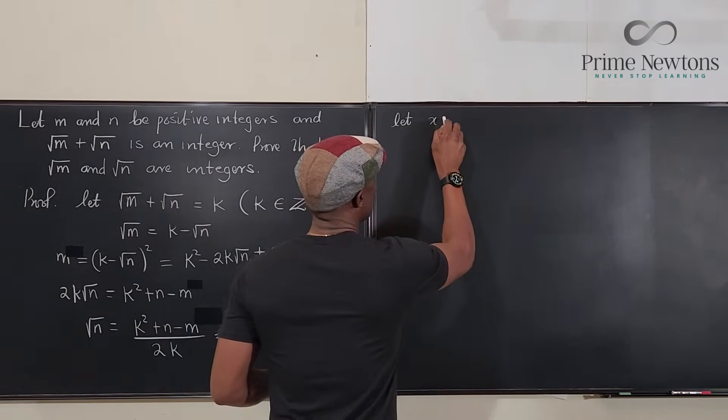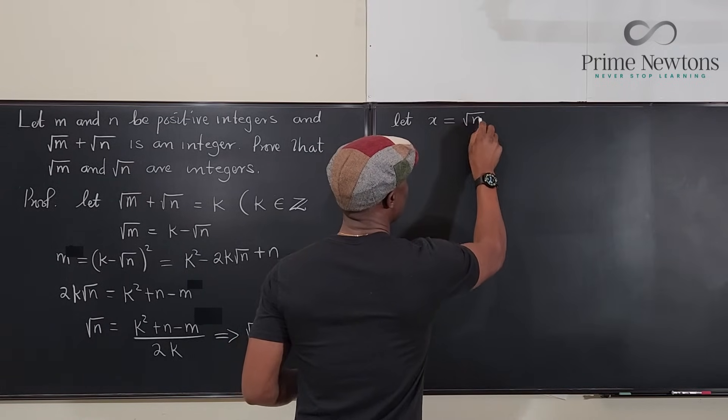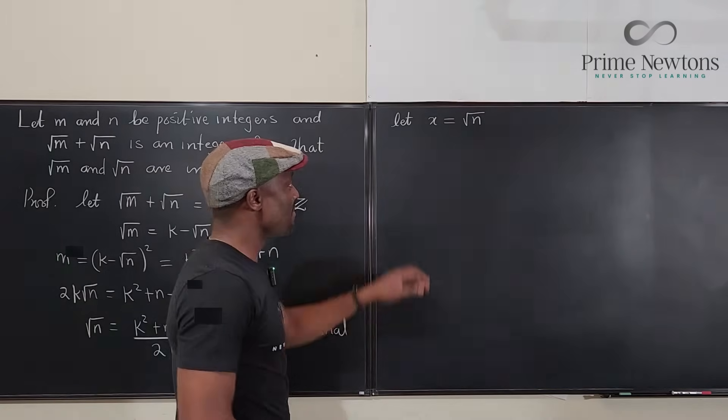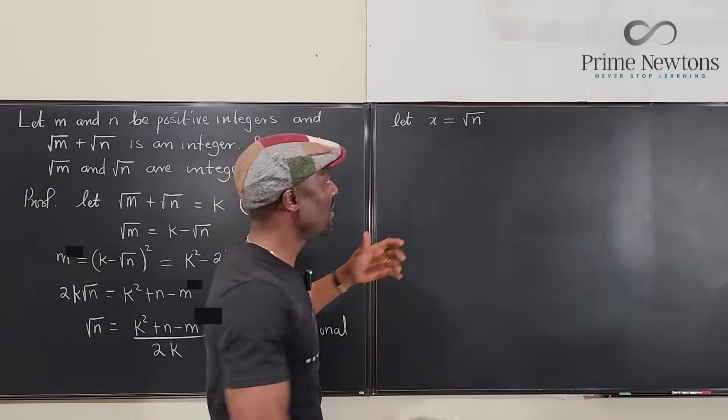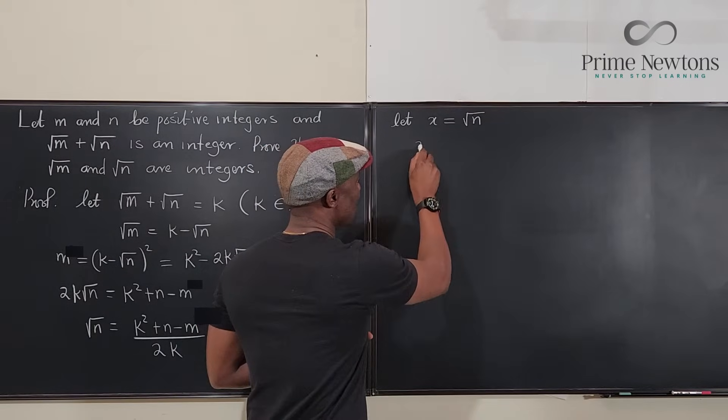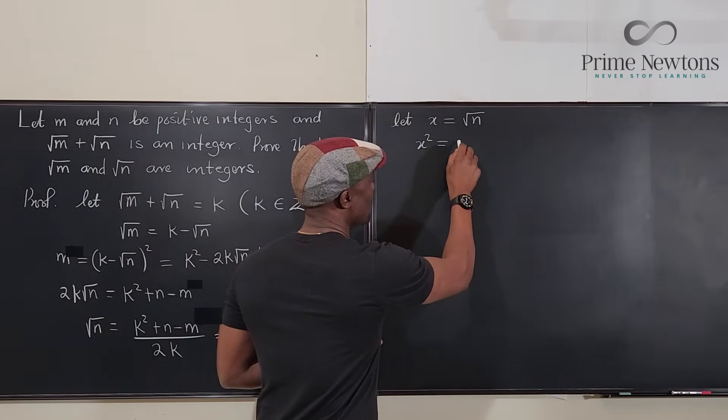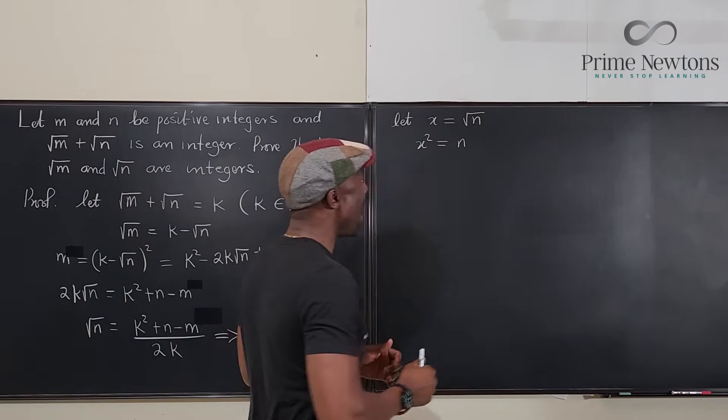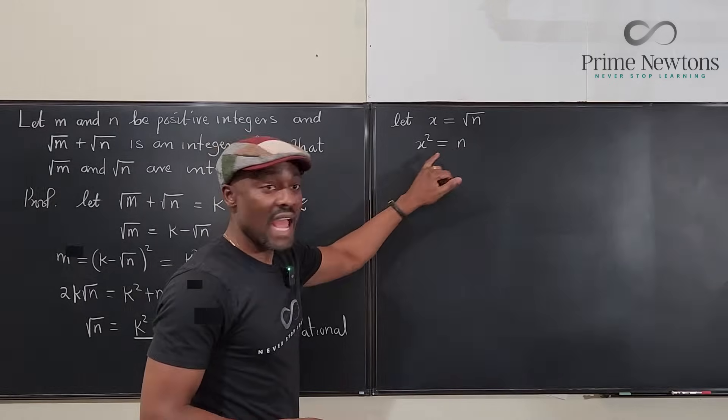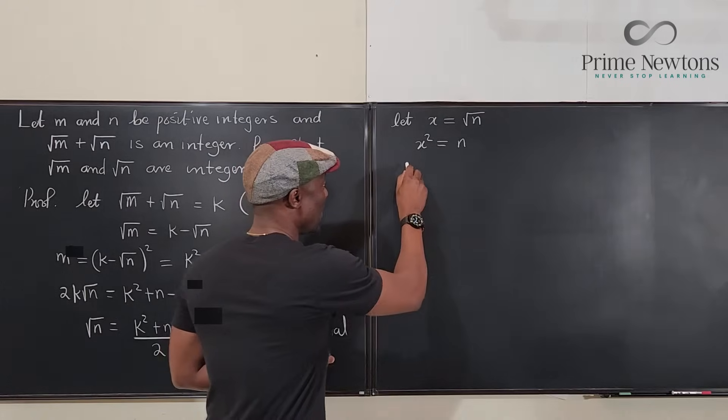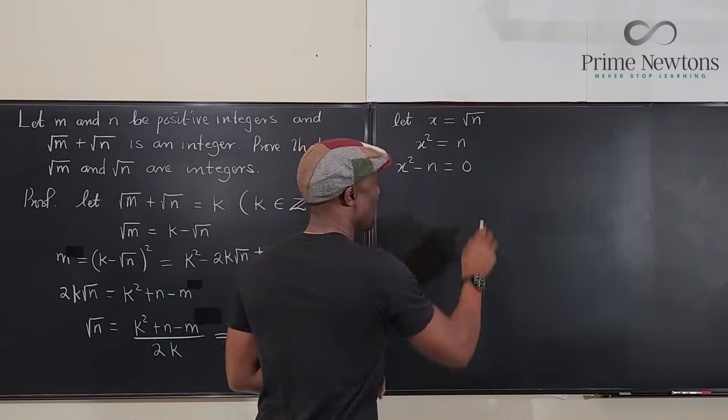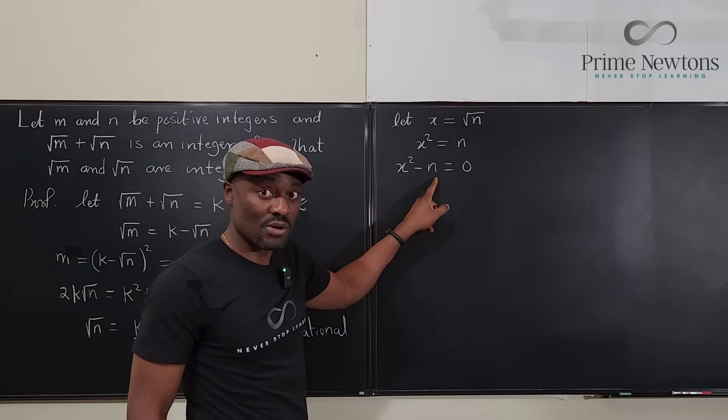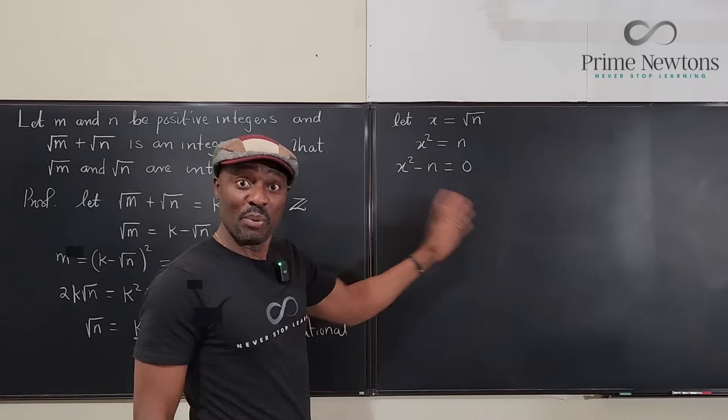Let x = √n. Then if I square both sides again just to get rid of the radical, I know that x² = n. I can pull n, remember n is an integer, so I can pull n to the left and say x² - n = 0.